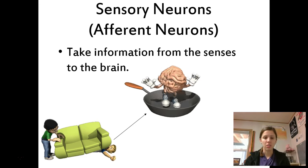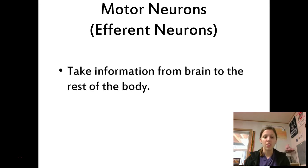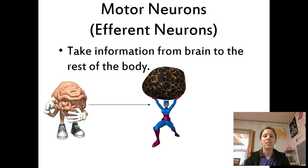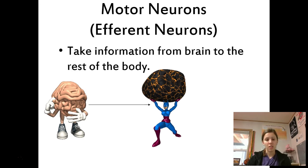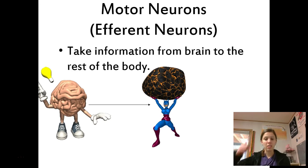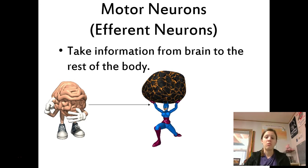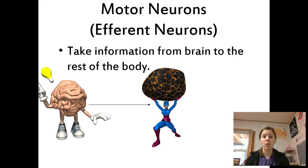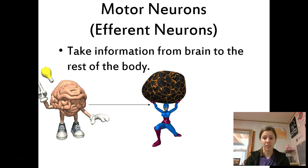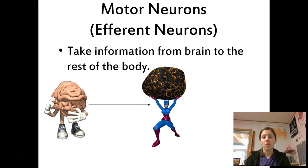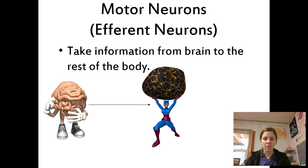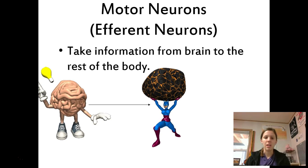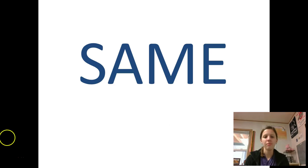The opposite of sensory neurons are motor neurons, also known as efferent neurons — so we have afferent and efferent. What motor neurons do is, rather than starting at my toe, they start in the brain and then go to the rest of the body. So let's say I want to get up and walk — those are motor neurons. The information starts in my brain, travels down to my leg, and lets my leg know 'hey, pick it up, we've got to start walking.'